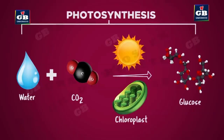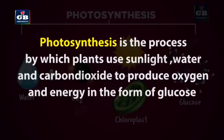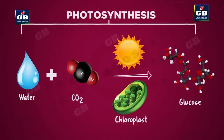Now let us see the definition of photosynthesis. Photosynthesis is the process by which plants use sunlight, water, and carbon dioxide to produce oxygen and energy in the form of glucose. In photosynthesis, water, carbon dioxide, and sunlight are the raw materials, while glucose and oxygen are the products.